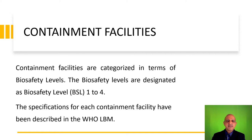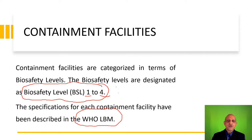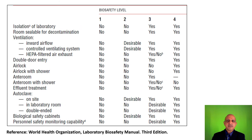The first concept is the concept of biosafety level. We have four biosafety levels, as I have discussed in the WHO Laboratory Biosafety Manual lecture, based on levels 1 to 4. This table provides a basic description for each BSL level — BSL 1, BSL 2, BSL 3, and BSL 4 — and has been derived from the WHO Laboratory Biosafety Manual, third edition.